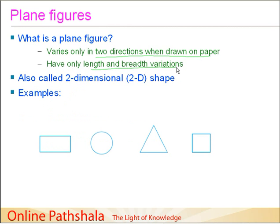This type of figure which varies only in two directions when drawn on paper is also called as a two-dimensional shape.